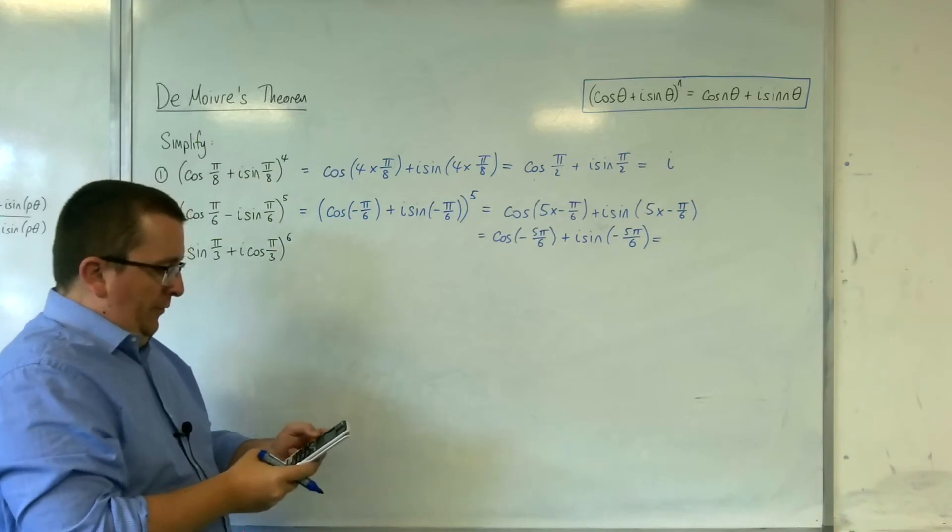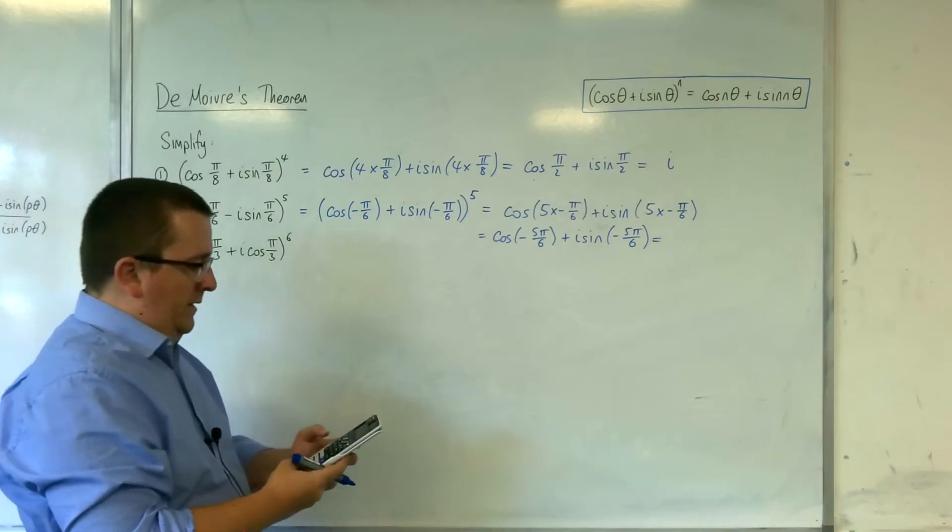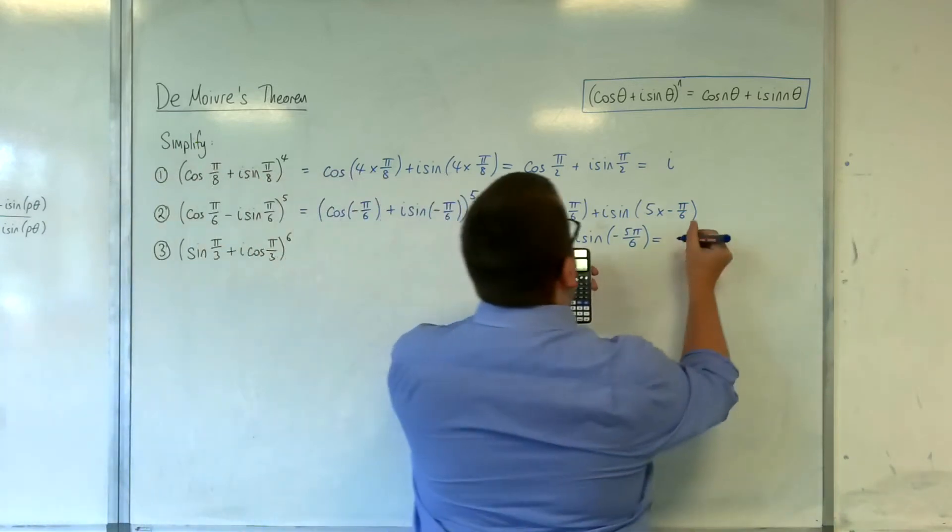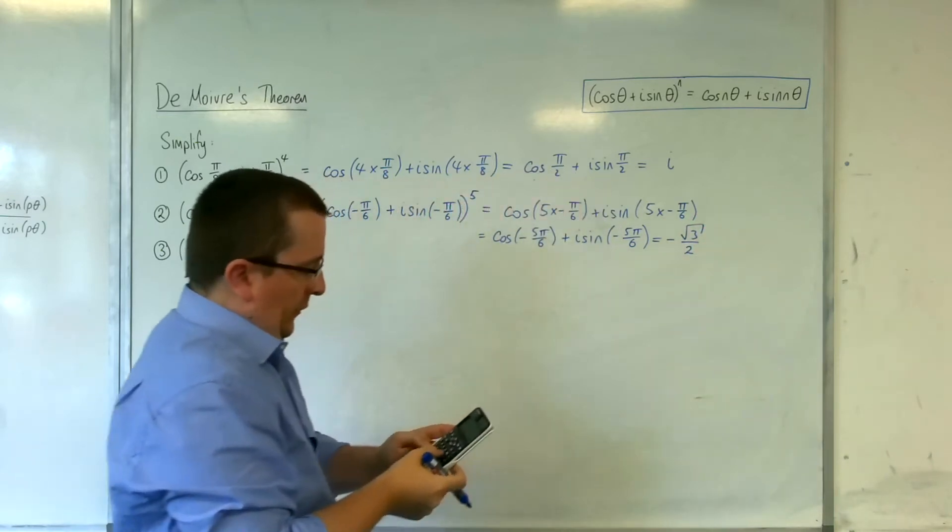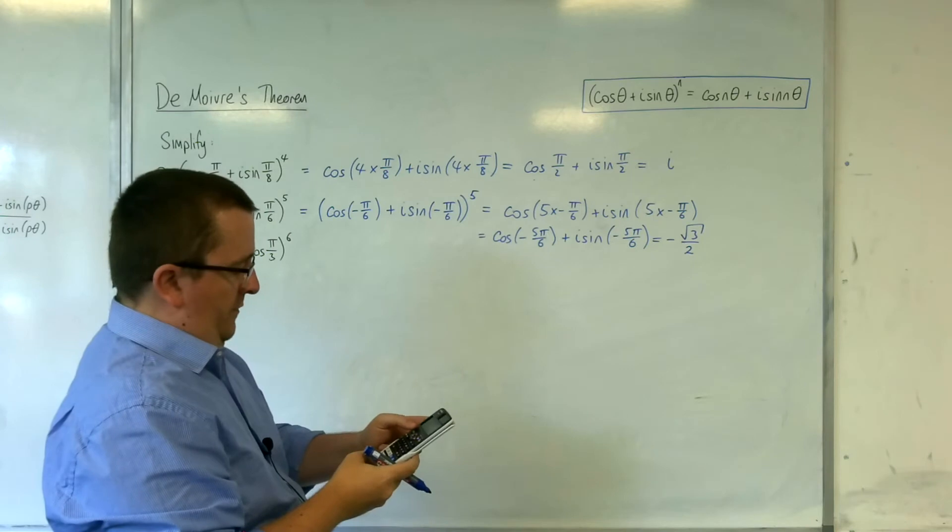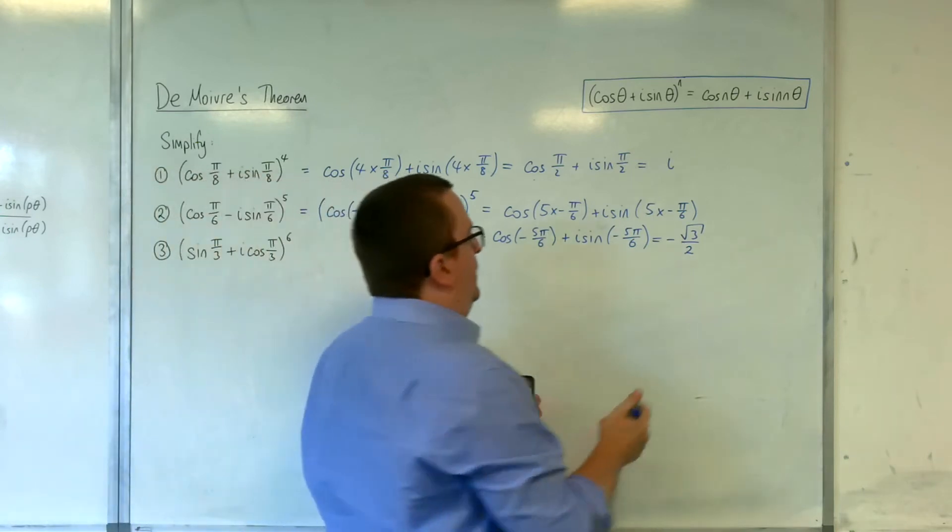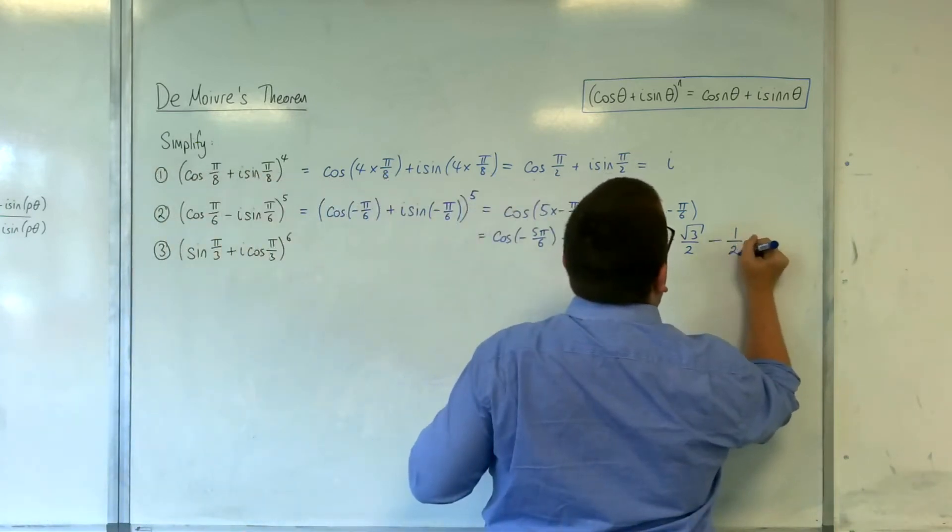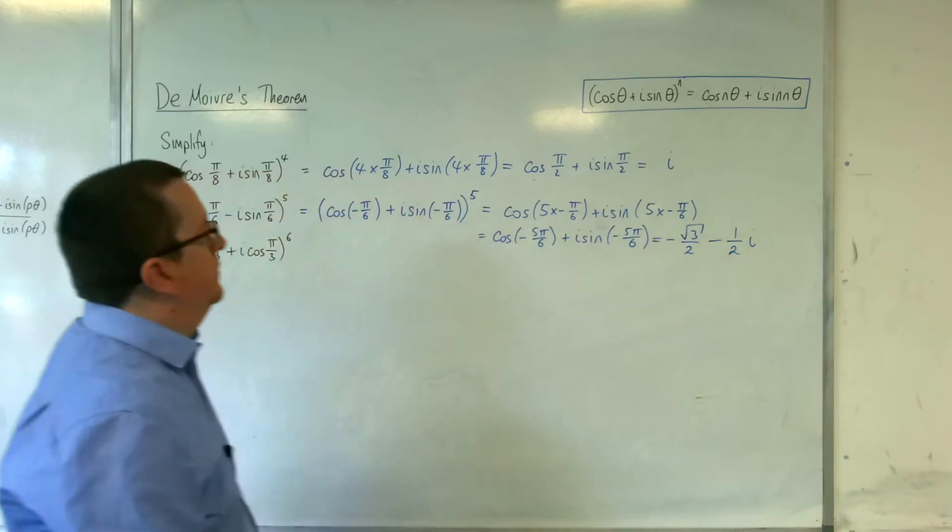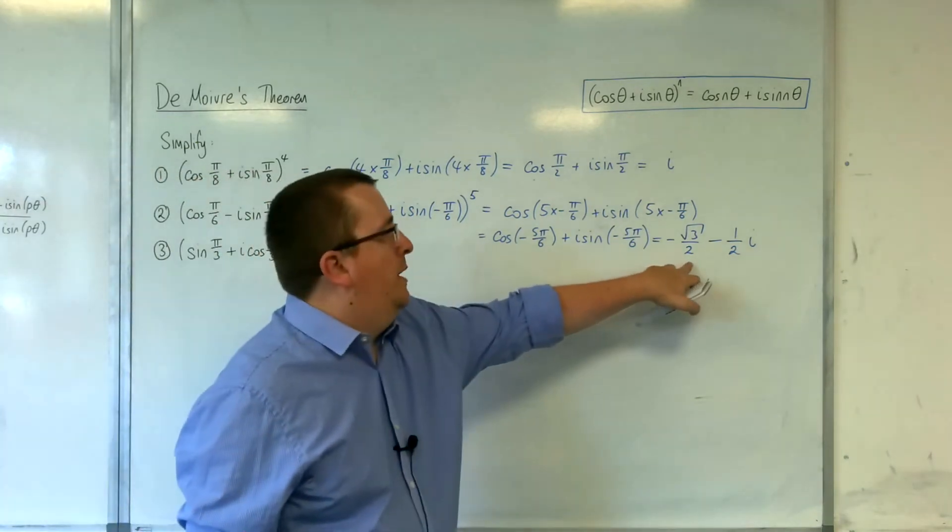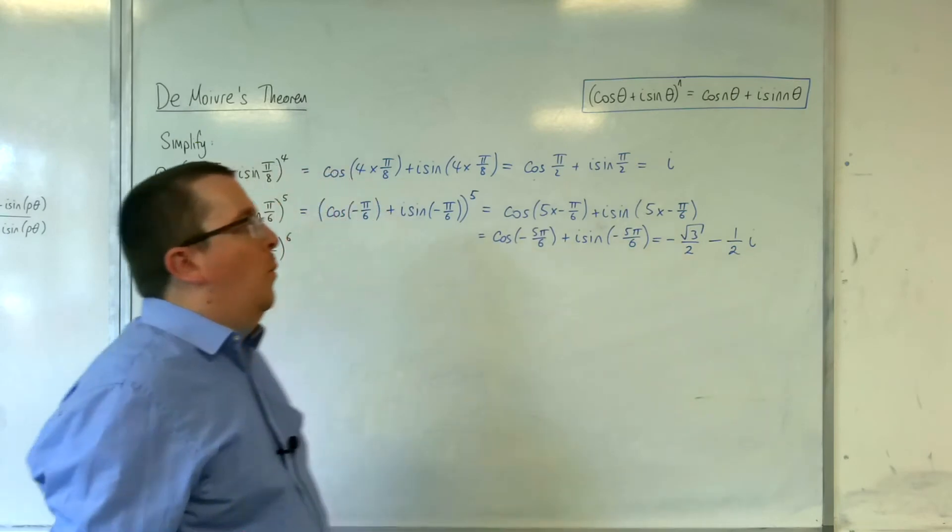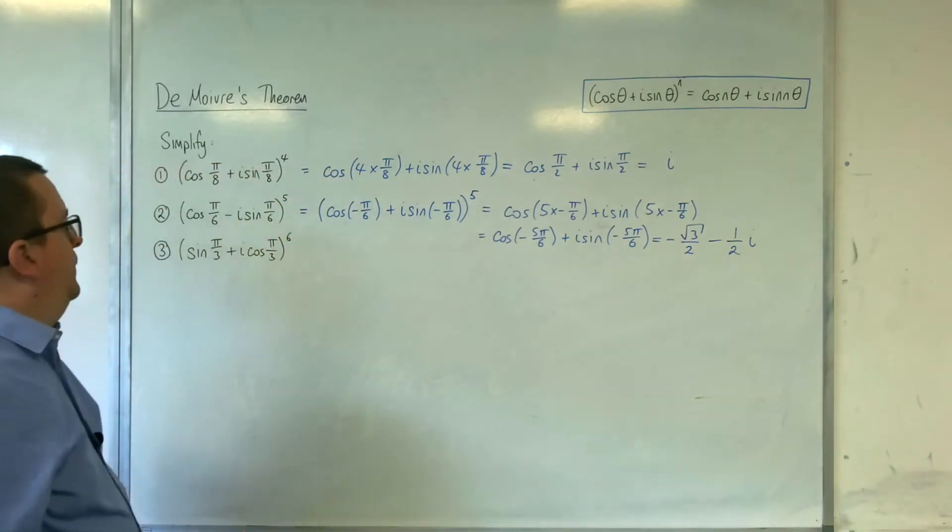So cosine of minus 5π over 6 is minus root 3 over 2. So we get minus root 3 over 2 there. And sine of minus 5π over 6 is minus a half, so minus one half i. And so that is minus root 3 over 2 take away one half i.